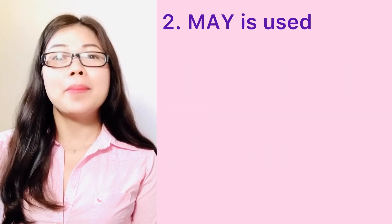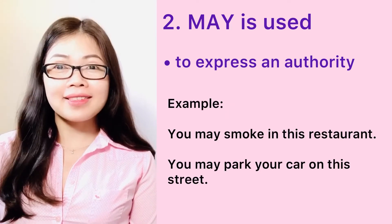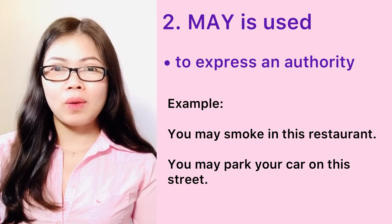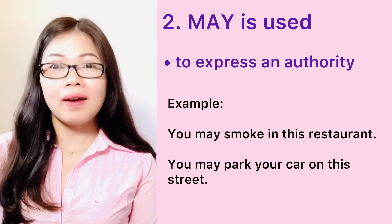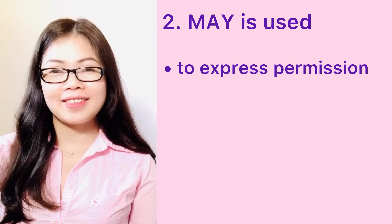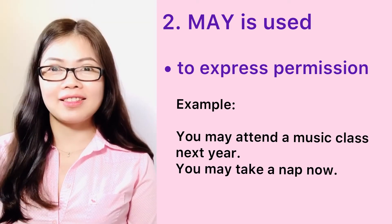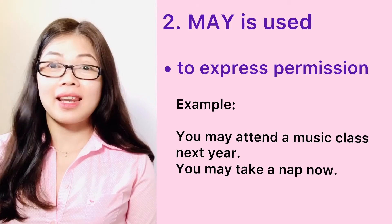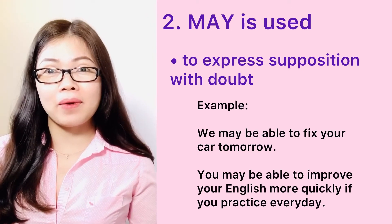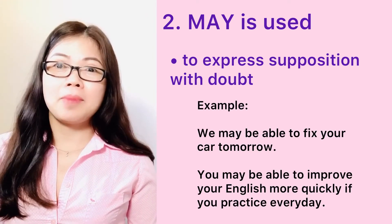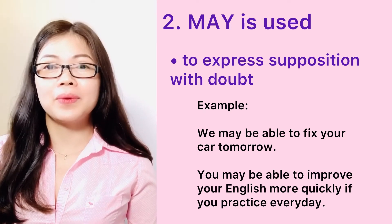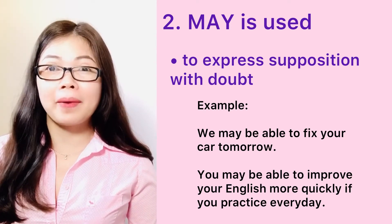Two: may. May is used to express an authority to do something. For example, you may smoke in this restaurant. You may park your car on this street. To express permission: You may attend a music class next year. You may take a nap now. To express supposition with doubt. For example, we may be able to fix your car tomorrow. You may be able to improve your English more quickly if you practice every day.